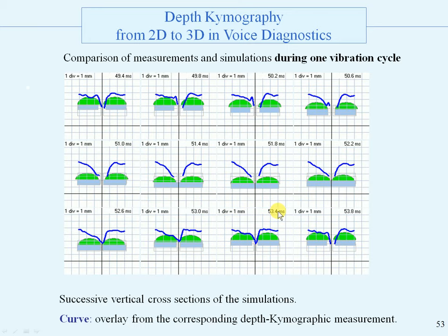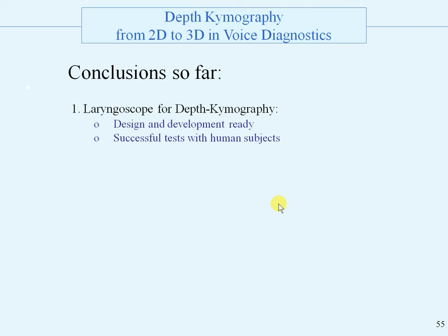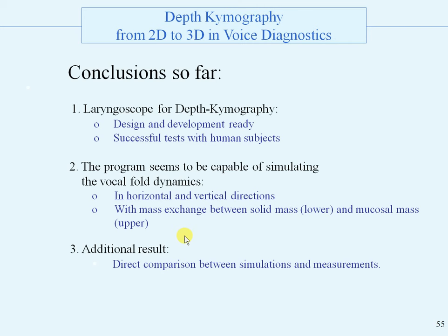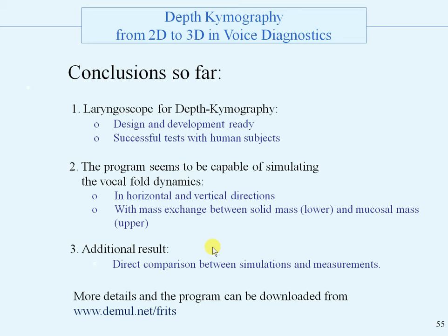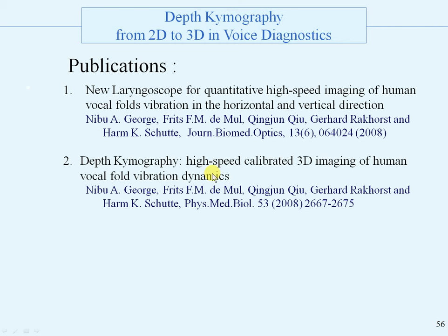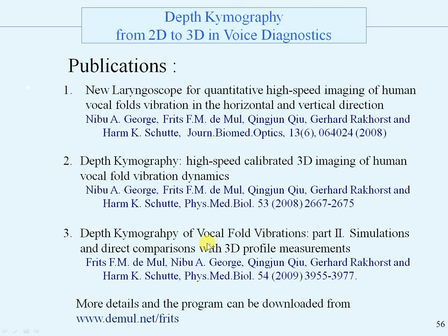Conclusions: the laryngoscope for depth kymography is ready and we did some successful tests. The program developed seems capable of simulating the vocal fold dimensions, and it is possible by changing variable values to investigate the influence of different parameters. An additional result: direct comparison between simulations and measurements is now possible. More details and the program can be downloaded from this site. The laryngoscope was published for the first time in this journal; the optics and more details about the kymograph were published in this article; and the simulations and comparisons in this publication. Here is the website again. This is the end of the presentation. Thank you very much.